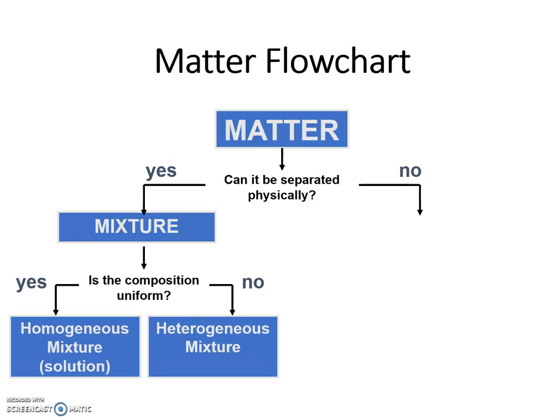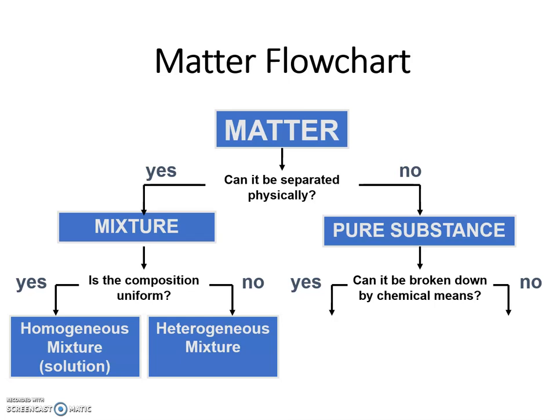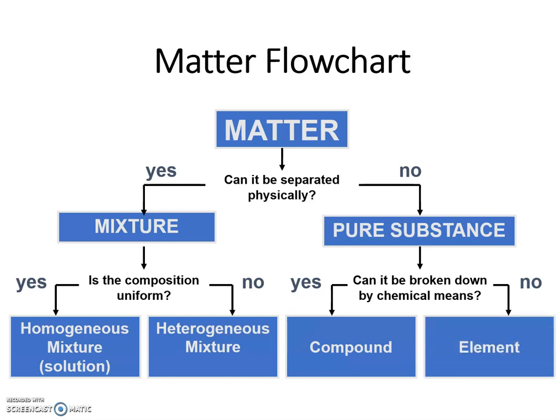If it can't be separated, that means that it's a pure substance. If it is already broken down by chemical means, that means that it's an element. But if it can be broken down further, then it's a compound. So technically, I could separate water into its different elements. I could separate the C's and the O's in carbon dioxide, although it's very difficult to do. They're still pure substances, even though they are elements that are combined together.